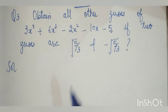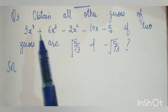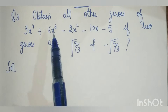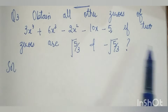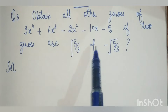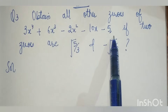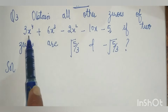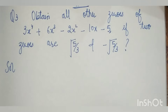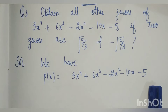What is question number 3? We obtain all other zeros of 3x⁴ + 6x³ - 2x² - 10x - 5, if two zeros are √(5/3) and -√(5/3). This is a polynomial and we have two roots. We know the highest degree here is 4, which means we will get 4 zeros. We have p(x) equal to this.